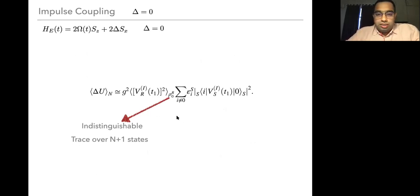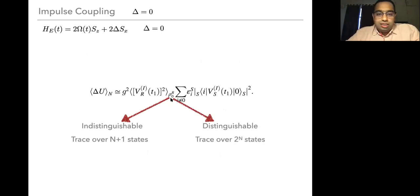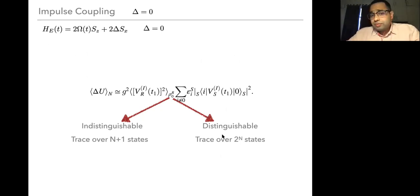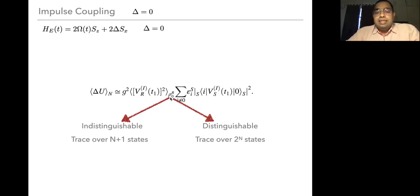The key to understanding the results is to see that the squared VR_i(t1) involves a trace over engine states from the initial state. The main difference between indistinguishable and distinguishable engines is that the Hilbert space has N+1 states for indistinguishable (collective spin states), whereas for N distinguishable two-level systems, you trace over 2^N states. The R operators are also different, as already discussed.